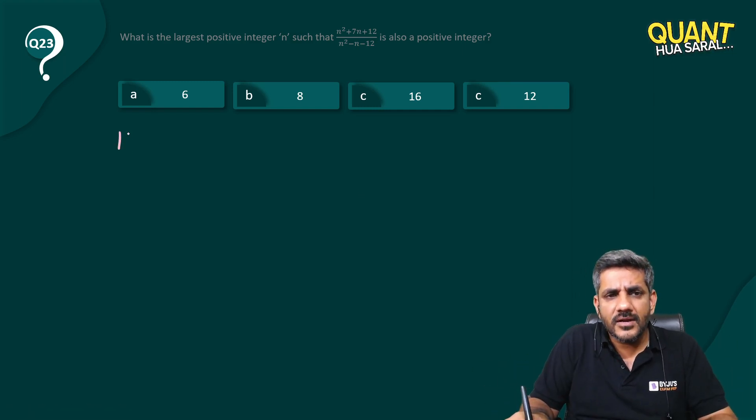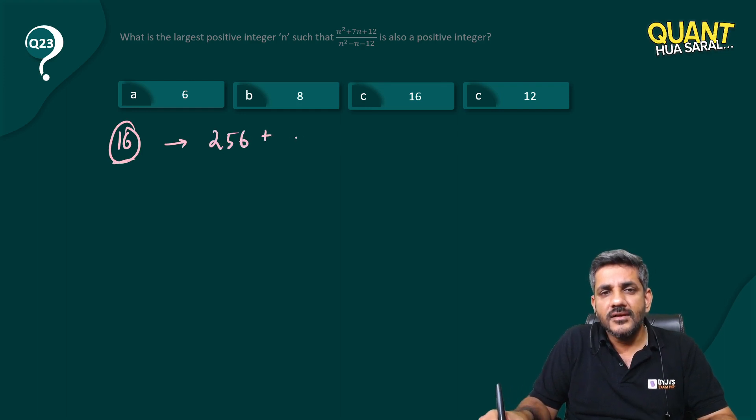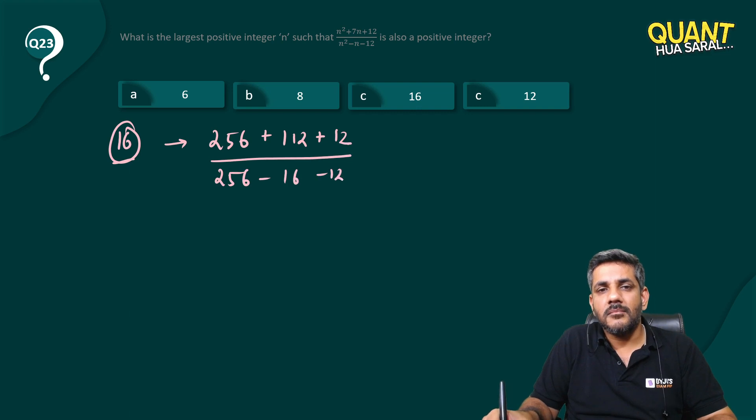Let us first plug in n as 16. What would I get? 16 square that is 256, 16 into 7 which is 112 plus 12 divided by 16 square that is 256 minus 16 minus 12. So in the numerator I am getting 300, I mean this is 68 and 80, and in the denominator I am having 256 minus 28, it is 228. It is not making it as an integer.